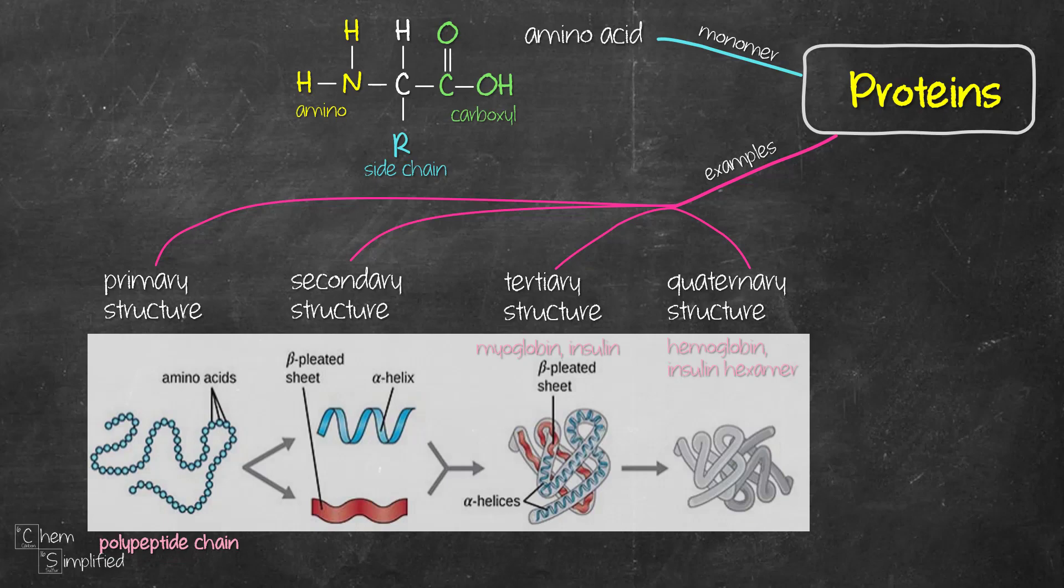When the backbone of the polypeptide chain interacts with one another, meaning we're talking about the atoms that are not part of the side chain, when those atoms interact with one another within the same polypeptide chain, then we get a secondary structure. And they have two types of shape. One is alpha helix and the other one is beta pleated sheet.